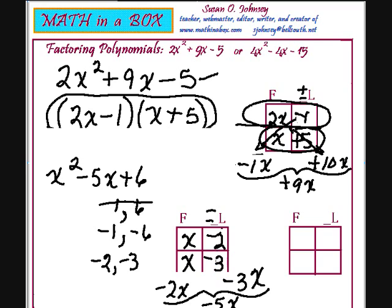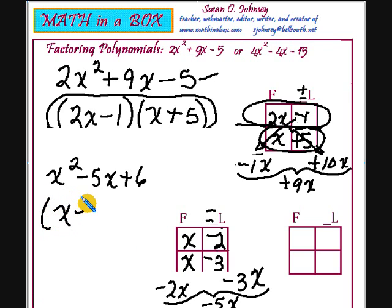Our binomials are x - 2. See it sitting right here? And, the other one is the x - 3.